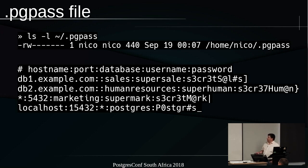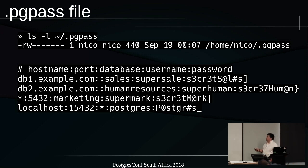The pgpass file uses a colon as the separator: hostname, port, database, username, and then the password. So you don't need to type in a password on the command line. It does support wildcards, and the order is important — it will match the most specific option first. For example, if you connect to a marketing database on any host, that username and password will be used. If you run custom ports, you can specify a different port number.